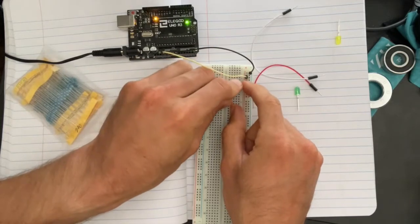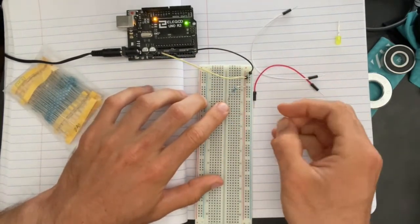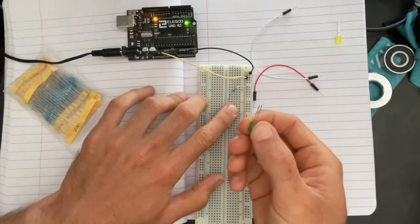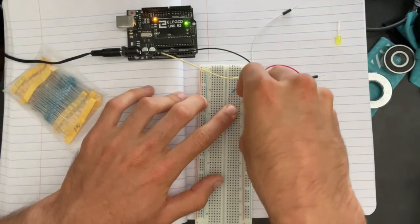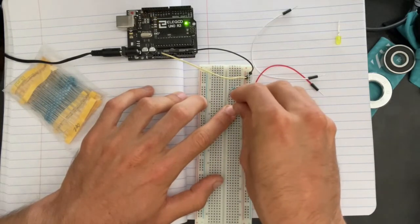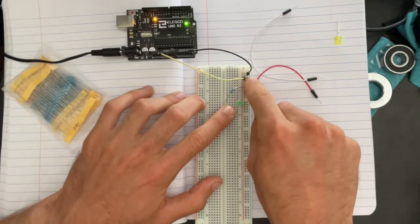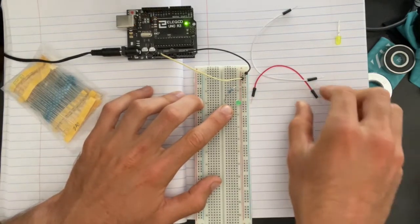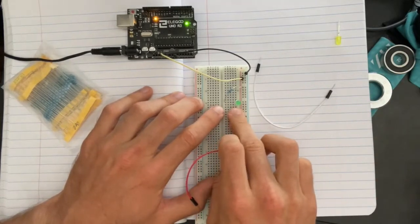Now I've formed a connection between positive to row 15. I'm going to take my longer foot of the LED and we're going to go from row 15 down to row 16 with our shorter foot just like that. Then we need to make this a complete circuit. We have to get this to the ground or the negative side, so I'm going to take anything along this row on row 16.